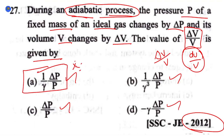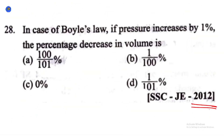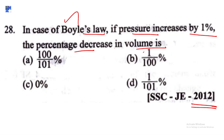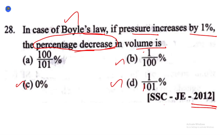This question was also asked in 2012. Using Boyle's law: if the pressure increases by one percent, what is the percentage decrease in volume? Option A: 100/101 percent, option B: 1/100 percent, option C: 0 percent, option D: 1/101 percent.